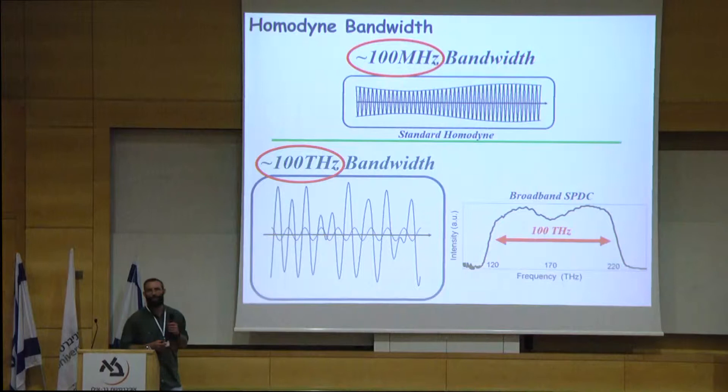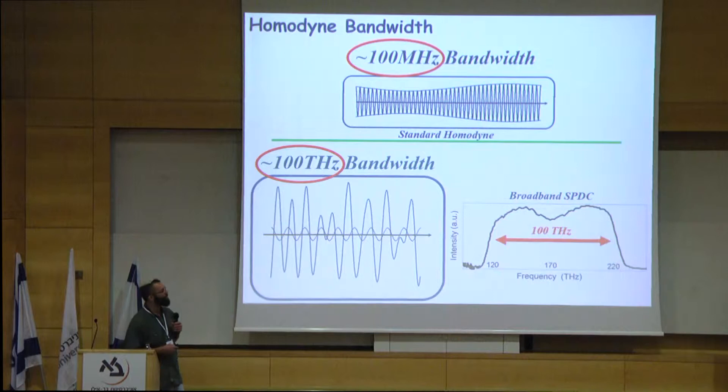This is even though we can easily generate an optical signal with such an optical bandwidth. For instance, the spectrum you see here is the output spectrum of spontaneous parametric down conversion, the main tool we use in order to generate squeezed light, spanning 100 terahertz, almost an optical octave in frequency.